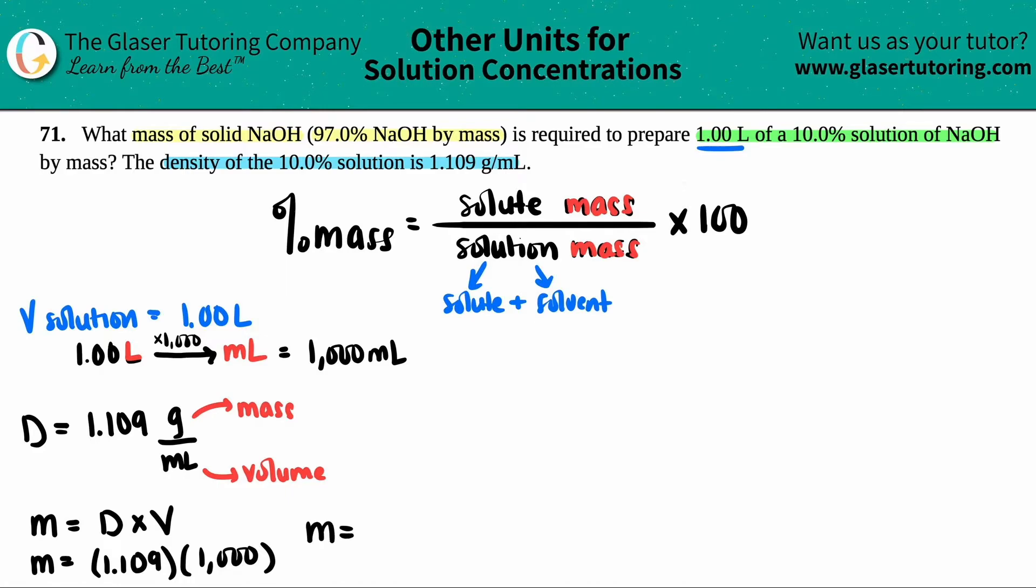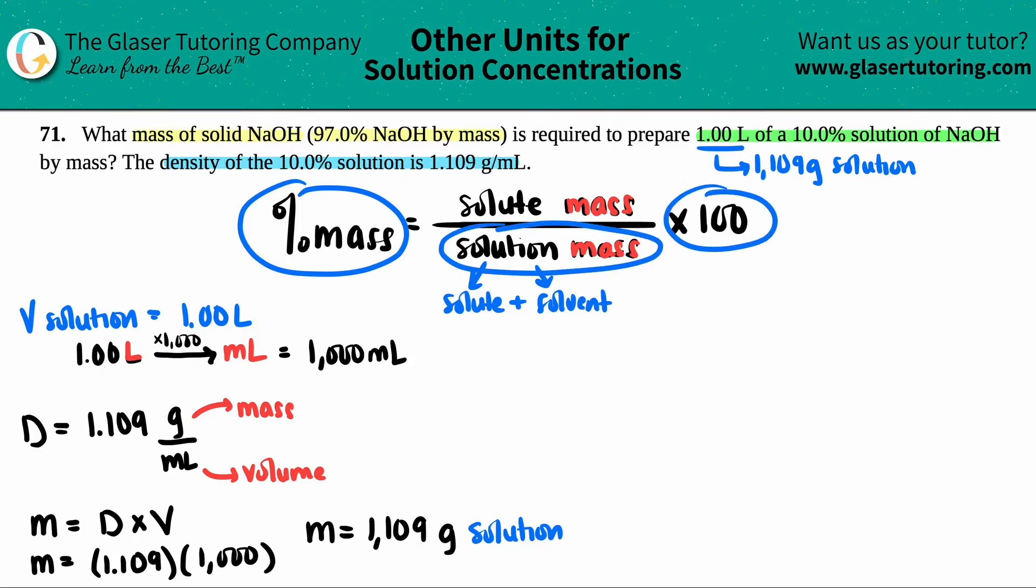When we do that, this is 1,109 grams. And since it came from a solution volume, this is the grams of the solution. Oh, so now I have this. I have the solution mass. This is the same thing as 1,109 grams of my solution. Oh, and they tell me that it's a 10% solution. So I have this. I have this. This is standard. Oh, so I can solve for my mass of my solute. Cool. Let's do it.